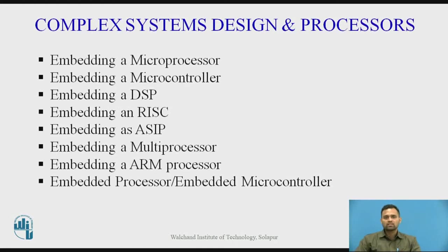Now, complex system design and processors. Complex systems are designed by embedding different microprocessors and microcontrollers. For embedding a microprocessor, examples include the 8085, 8086, 68HC families, and other microprocessors such as ARM7 and ARM9, which are embedded into complex system designs.